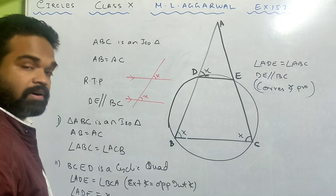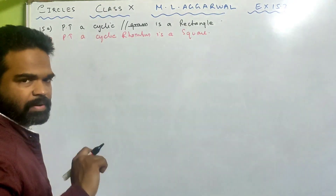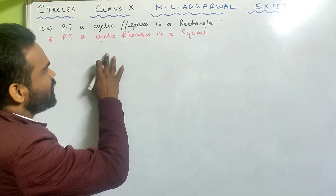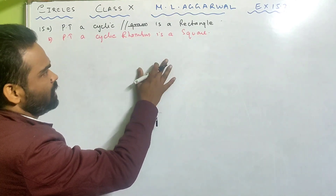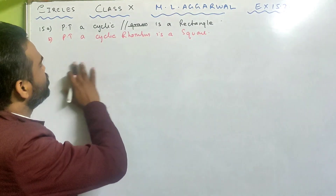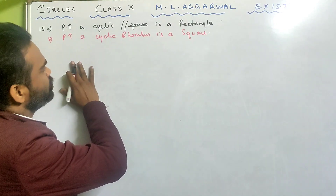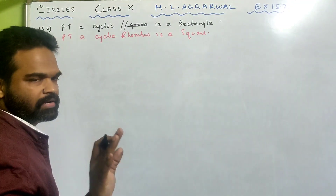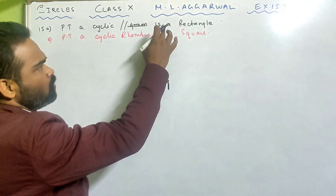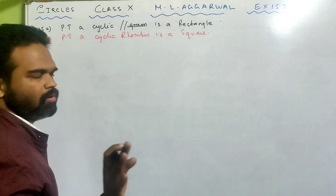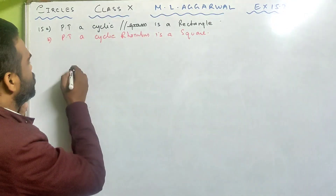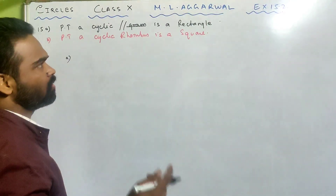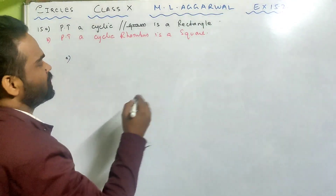We'll do number 15 now. Look at 15 part A: prove that a cyclic parallelogram is a rectangle. And 15 part B: prove that a cyclic rhombus is a square. Both are interrelated. If you know how to do this, then this will also be done. Let us look at 15 part A — prove that a cyclic parallelogram is a rectangle.